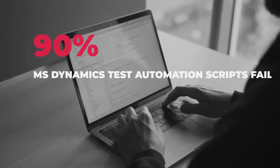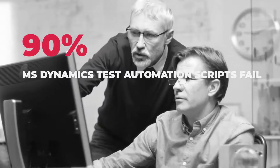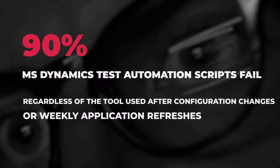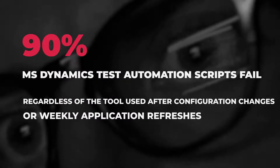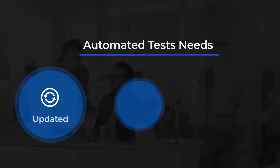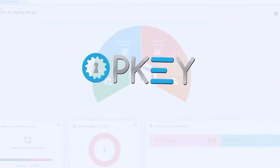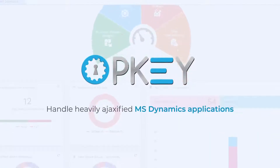Studies show 90% of MS Dynamics test automation scripts fail — regardless of the tool used — after configuration changes or weekly application refreshes, making testers deal with test flakiness and an unstable test structure. When this happens, your suite of automated tests needs to be updated, maintained, and verified frequently.